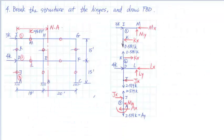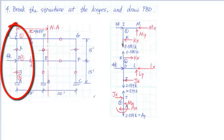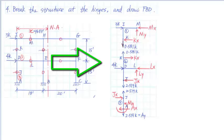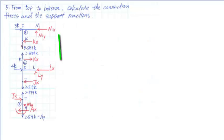Next, we break the structure at the hinges and draw a free body diagram of each member. There are two connection forces at each hinge. Then, working from the top down, we calculate the connection forces at the hinges and support reactions.